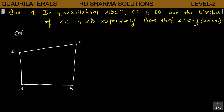In Quadrilateral ABCD, CO and DO are the bisectors of Angle C and Angle D respectively. Prove that Angle COD is equal to half of (Angle A plus Angle B).